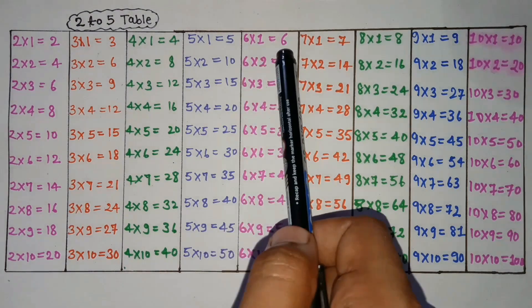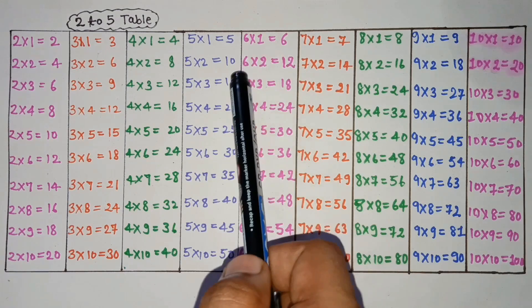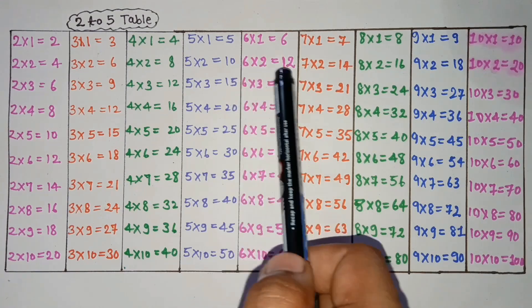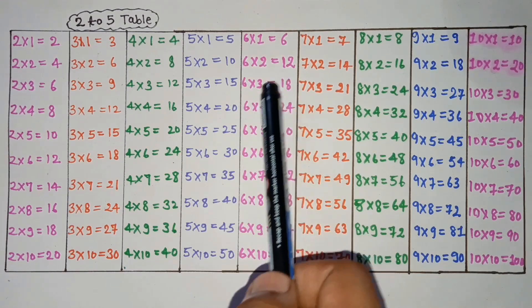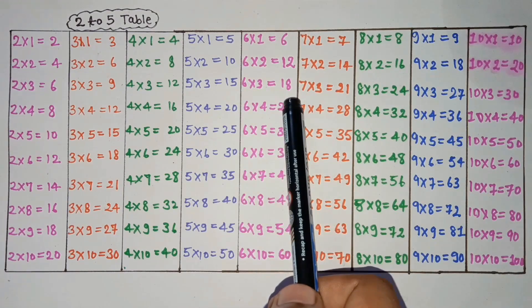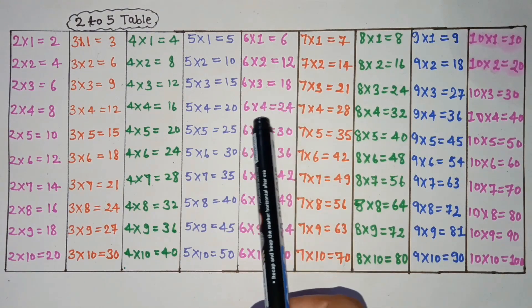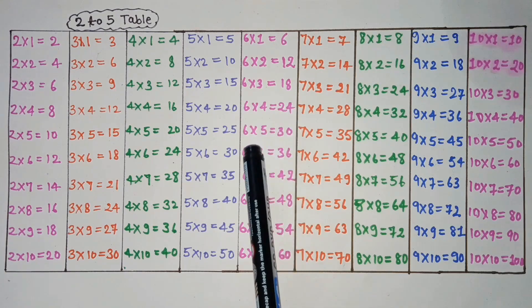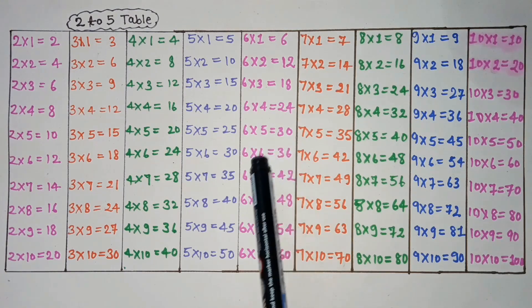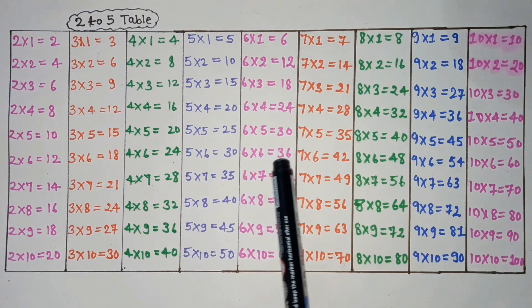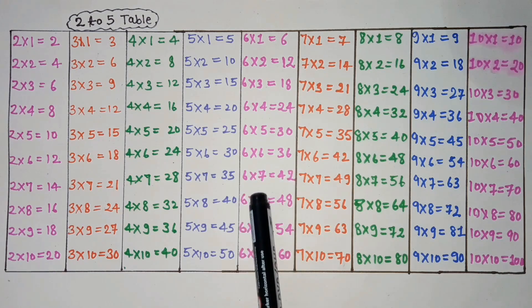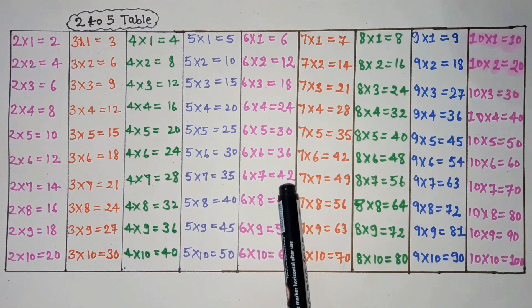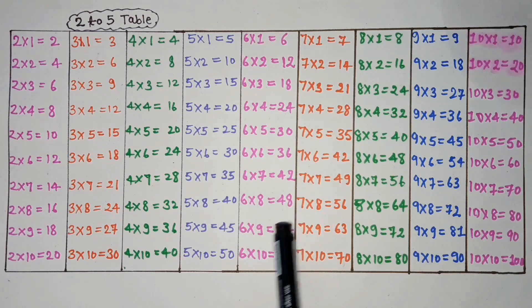6 ones are 6. 6 twos are 12. 6 threes are 18. 6 fours are 24. 6 fives are 30. 6 sixes are 36. 6 sevens are 42. 6 eights are 48.